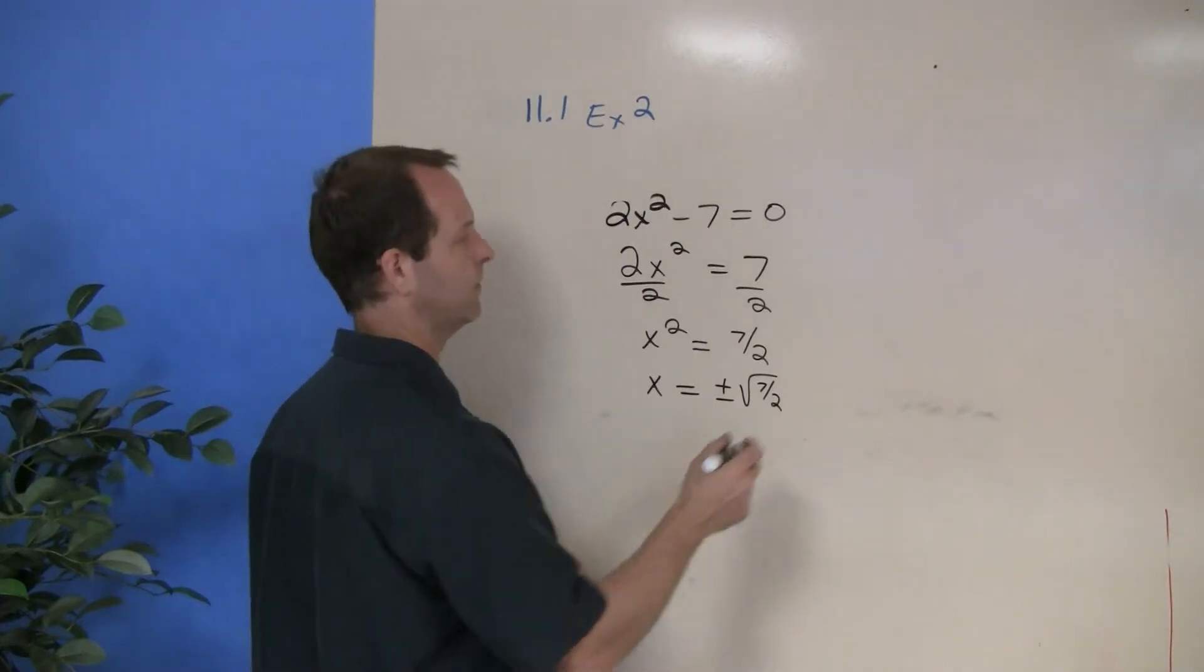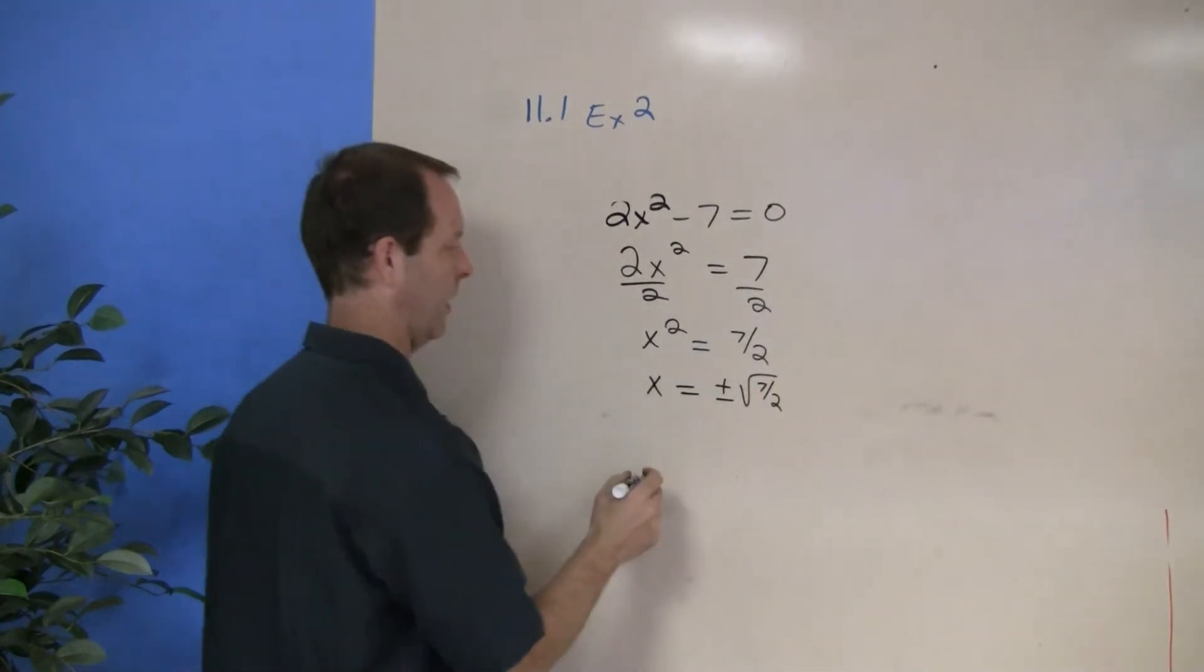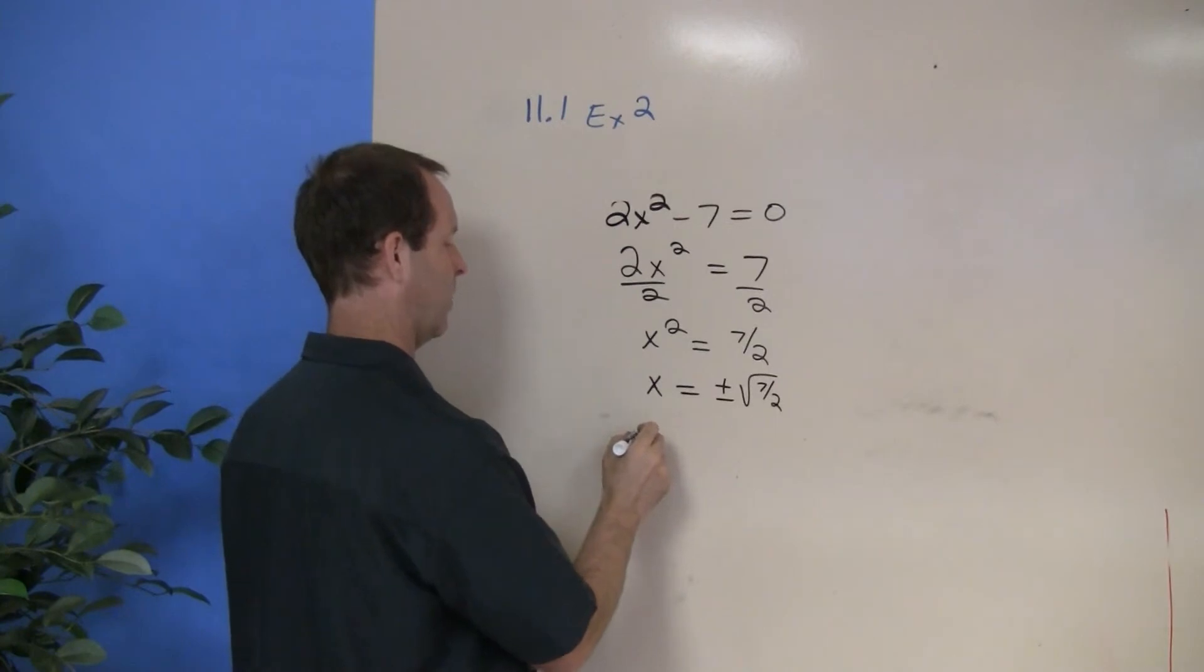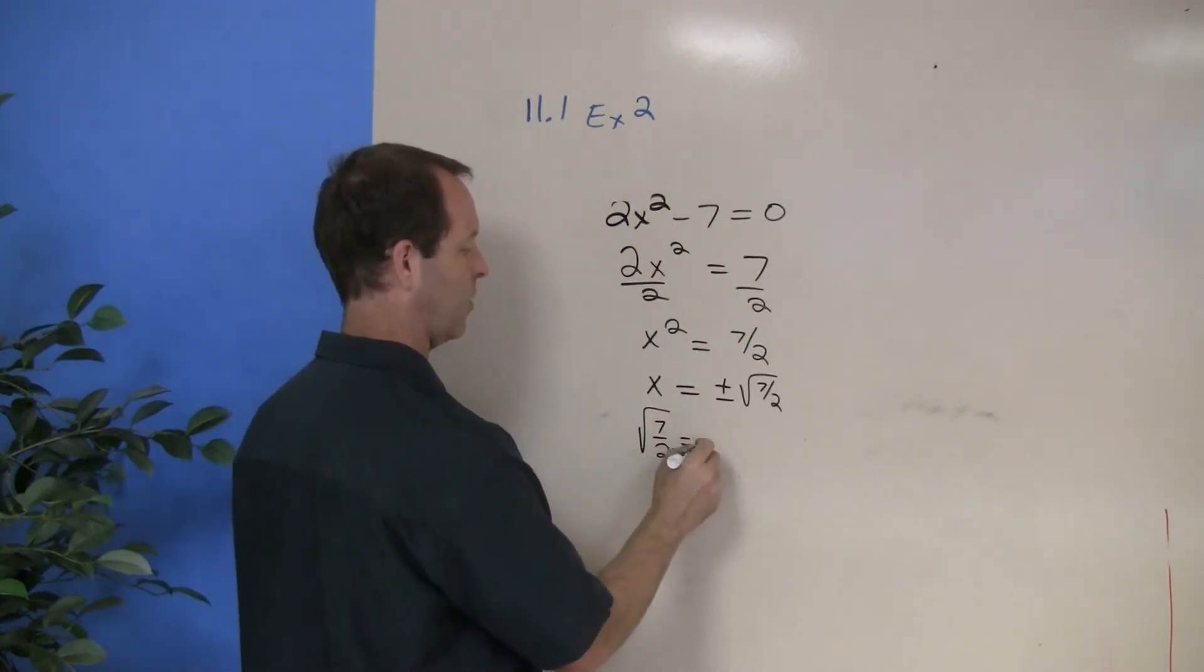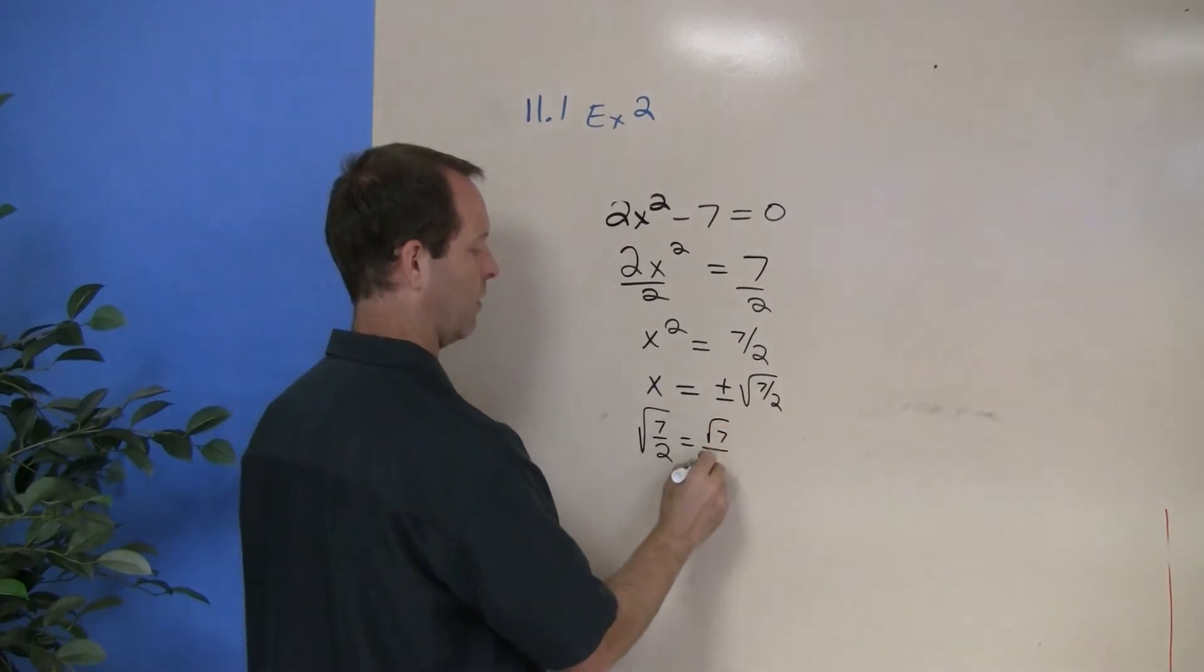So let's write that out. The square root of 7 halves equals the square root of 7 over the square root of 2.